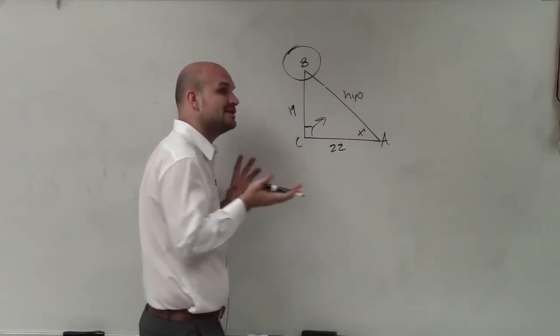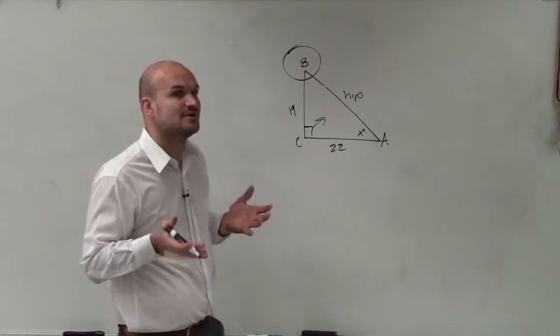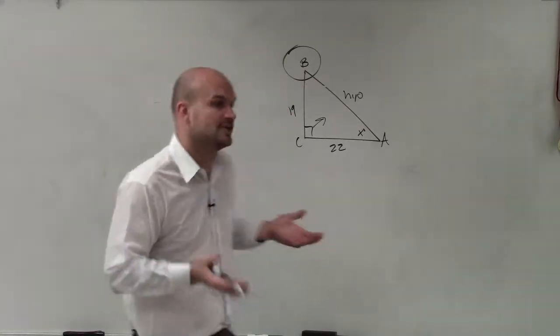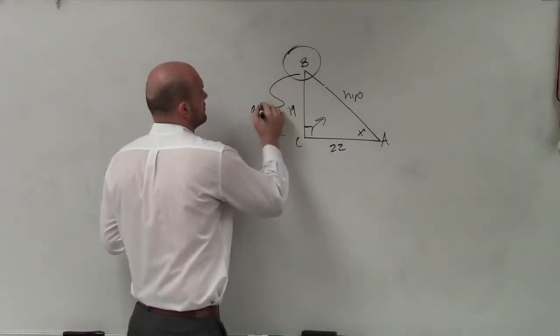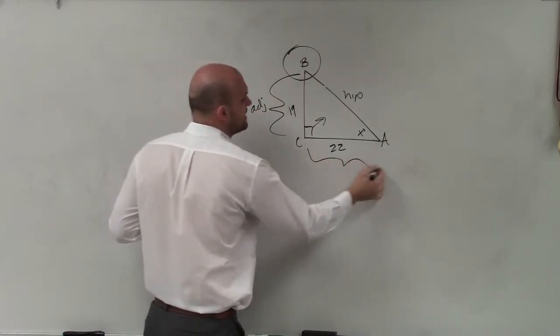The next one, find the adjacent. The adjacent has to connect your angle with the 90 degree angle. And then this would be the opposite.